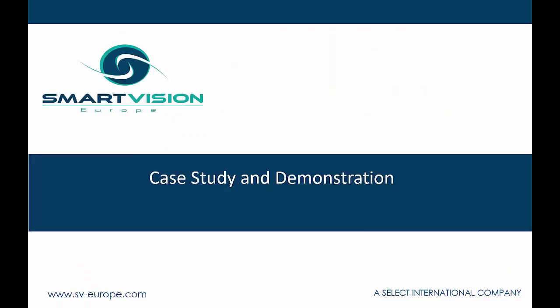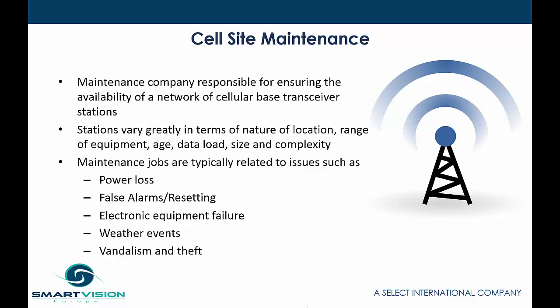To lead into the next example, we'll introduce a case study demonstrating the Predictive Operational Analytics software and how it was used to address three key areas for a company wanting to adopt a more data-driven approach to proactive maintenance. This case study relates to a maintenance company responsible for a network of cellular-based transceiver stations — a mobile phone network. The stations vary greatly in location, ranging from remote areas to highly populated urban areas, with equipment age, data load capacity, site size, and complexity all varying considerably.